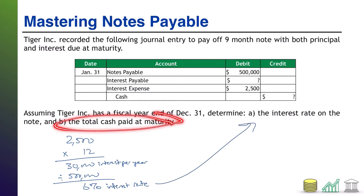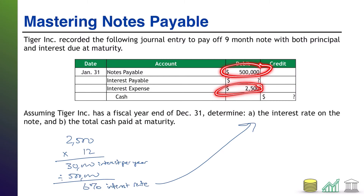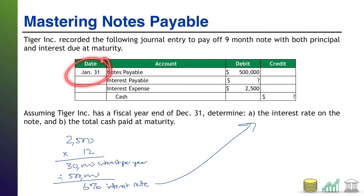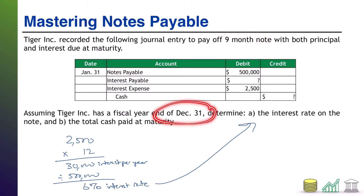Part B asks us: what's the total cash paid off at maturity? We know we're going to pay off the $500,000 principal balance, and we know we've got to pay off that $2,500 interest expense. What's missing is the interest payable. Interest is being racked up at $2,500 per month, and January represented the final month of nine months in the life of this note — which means on December 31st, when Tiger Inc. hit its year end, Tiger Inc. would have recorded eight months of interest expense as interest payable, because it wasn't being paid yet.